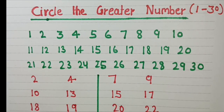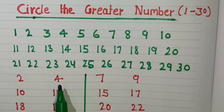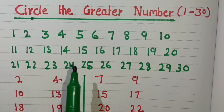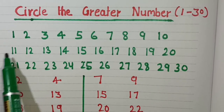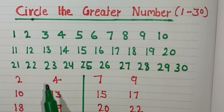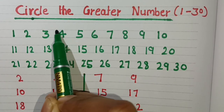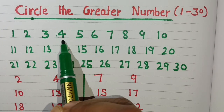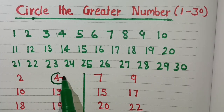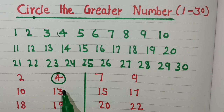Let's take some examples. Children, here you can see number 2 and number 4. We will circle the greater number. Let's use counting to find which is greater: 1, 2, 3, 4. So 4 is the greater number. We will circle number 4.